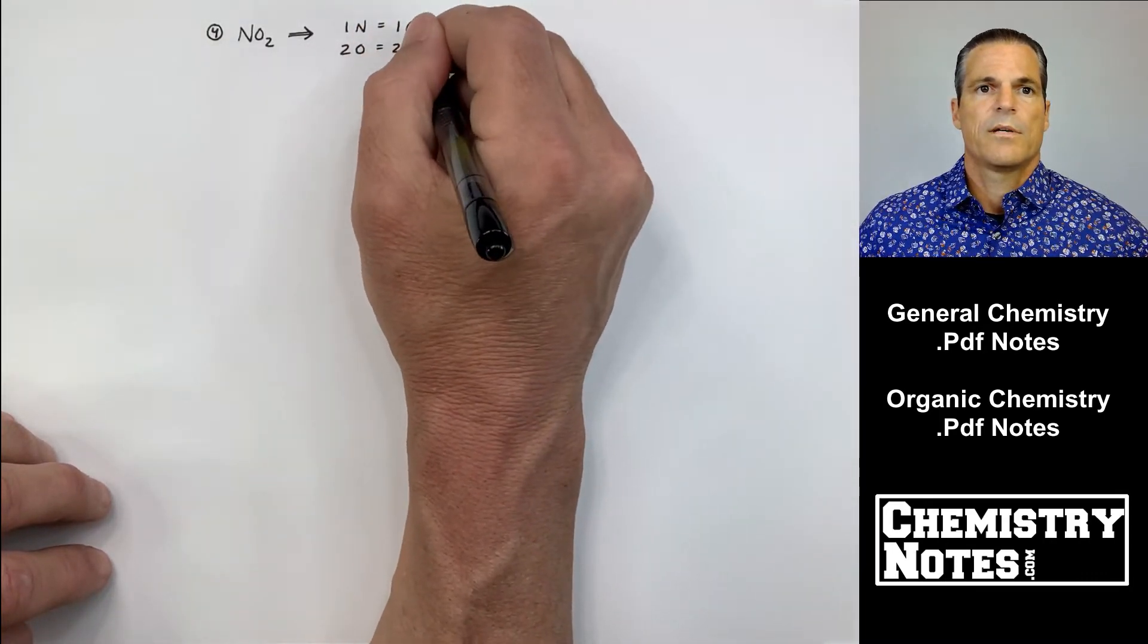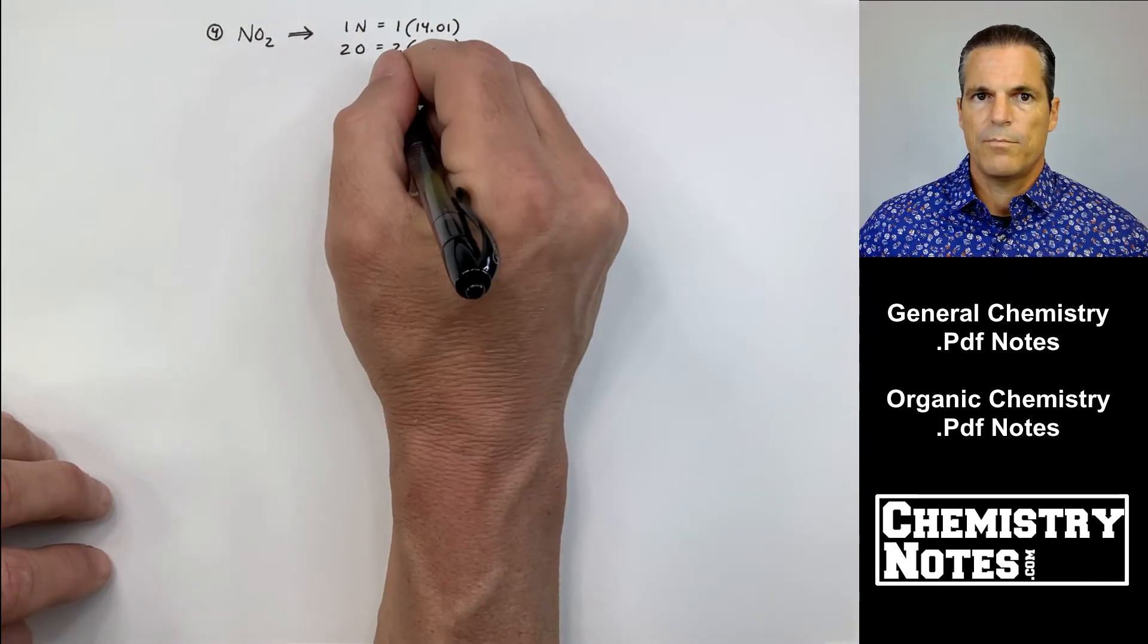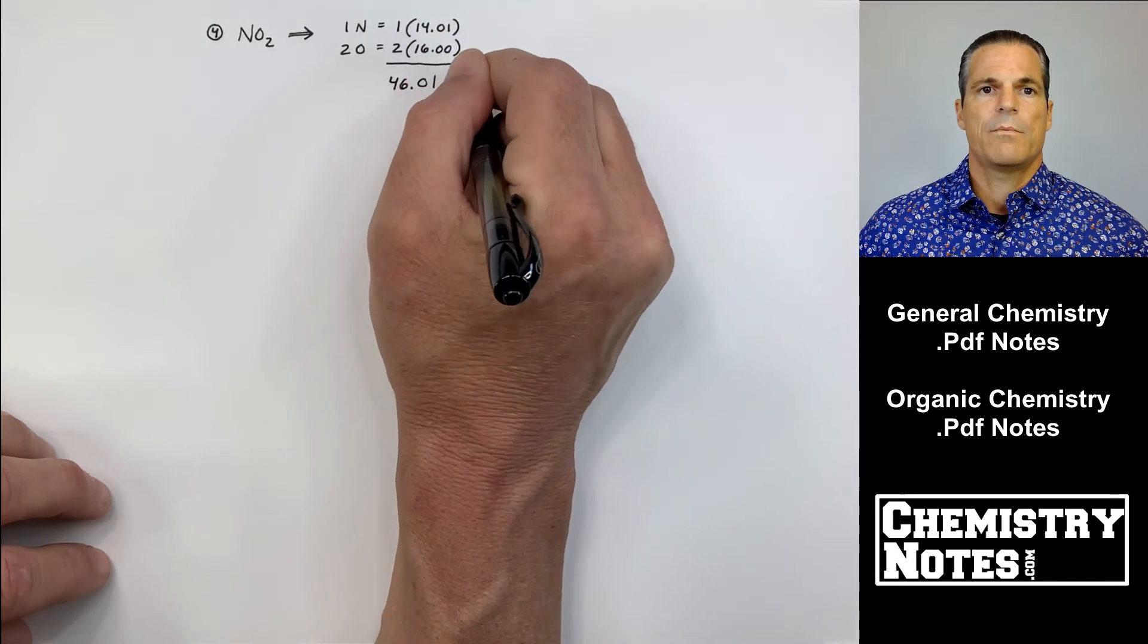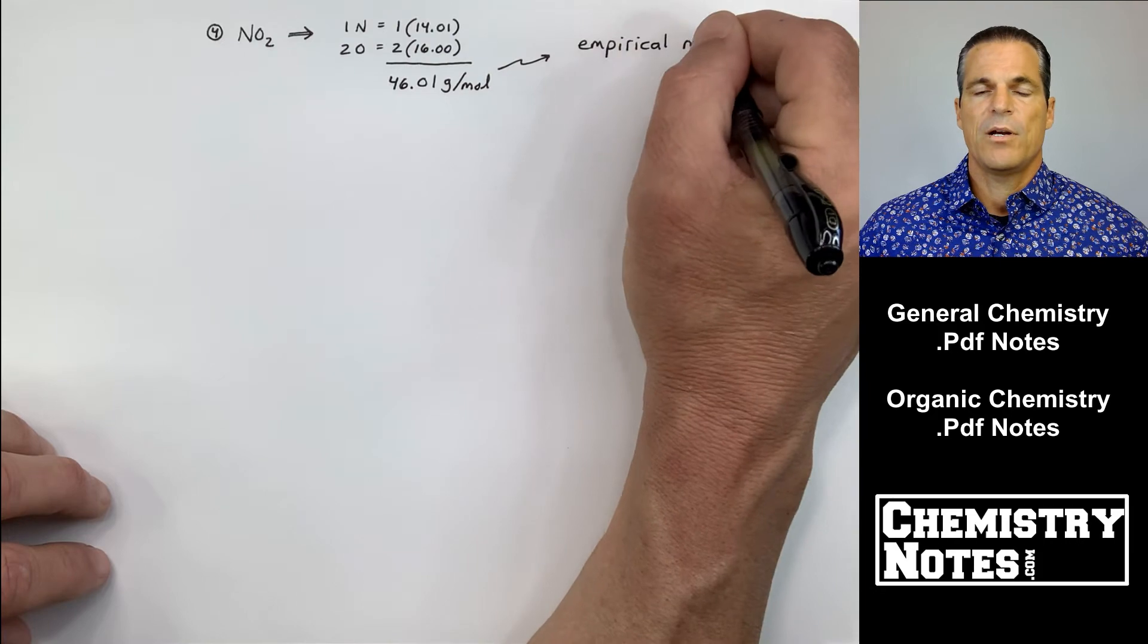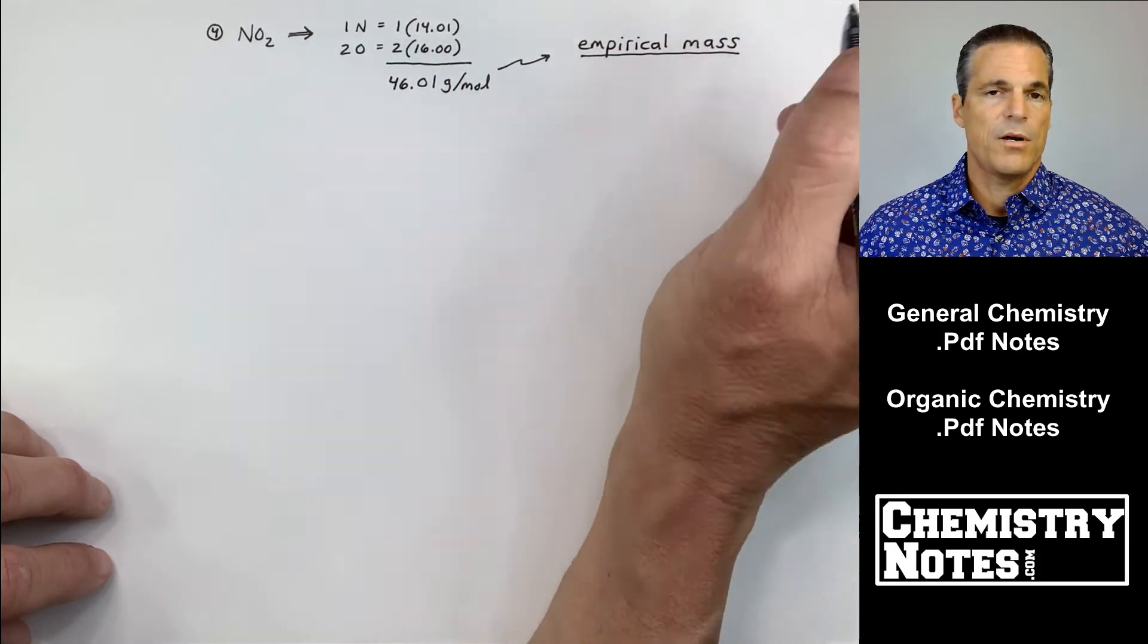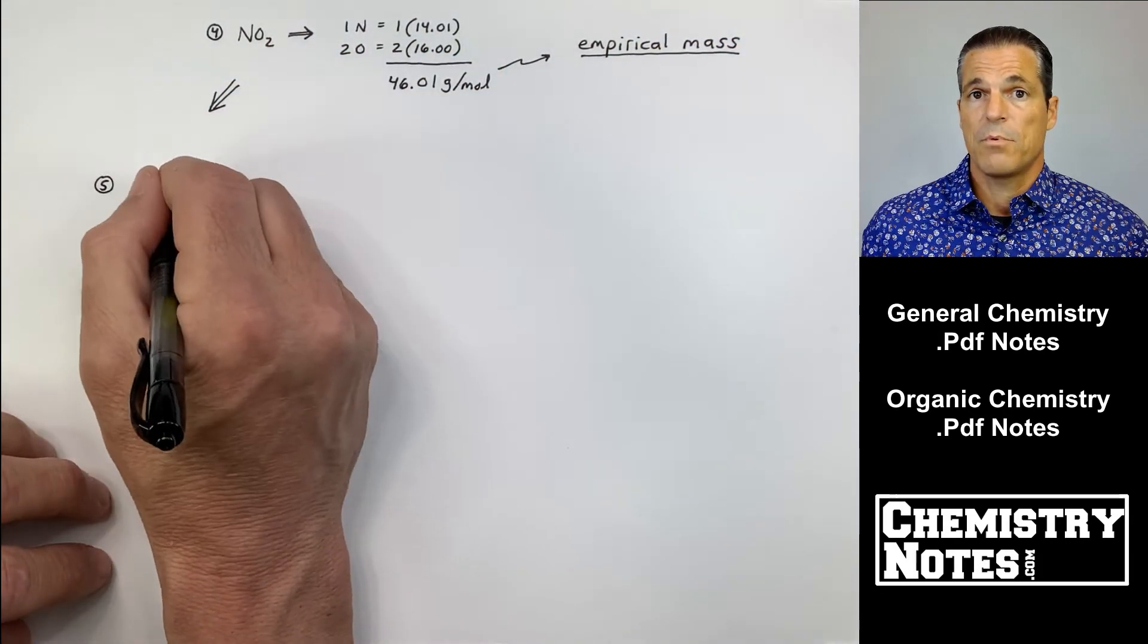that would give me the empirical mass or the empirical formula mass, and I'm going to do that now in step four. You got one nitrogen which weighs 14.01 grams per mole on the periodic table, two oxygens each weighing 16. I end up with an empirical formula mass or empirical mass of 46.01 grams per mole.